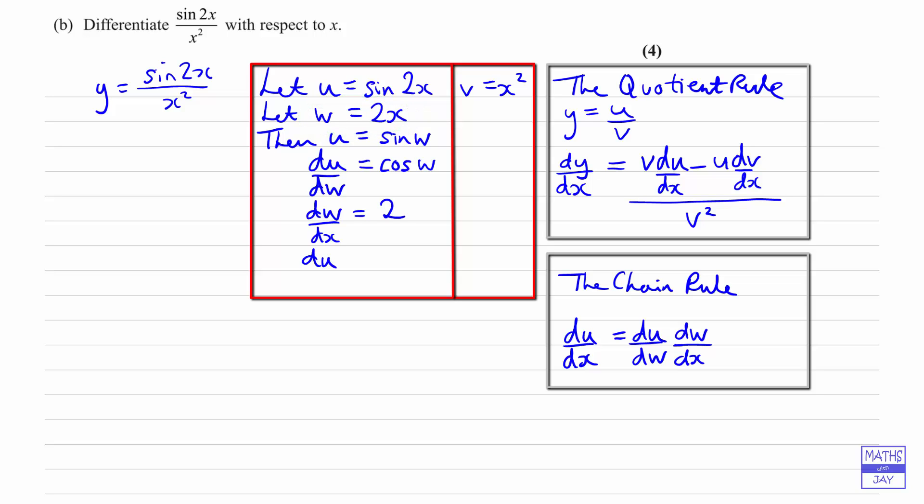So now applying the chain rule, du by dx is going to be du by dw times dw by dx, so it's 2 cos w. But w is 2x, so it's 2 cos 2x. So that's worked out du by dx.